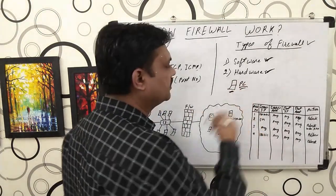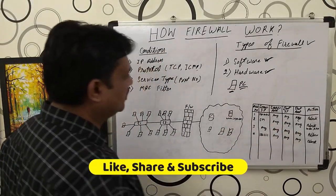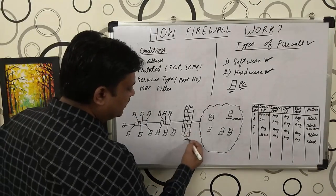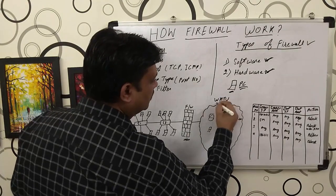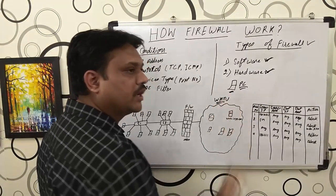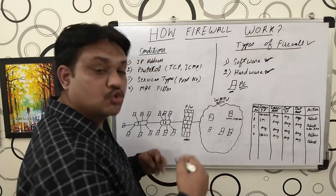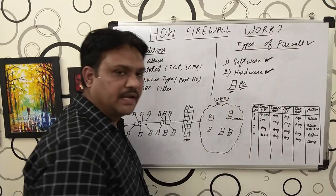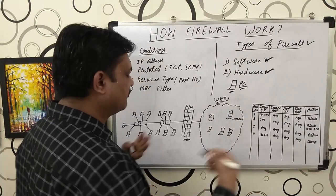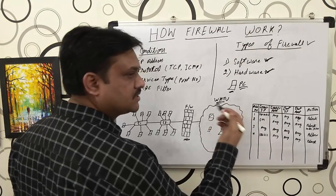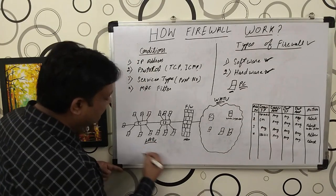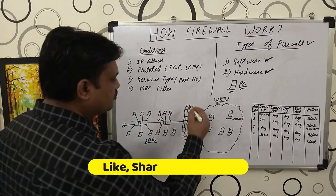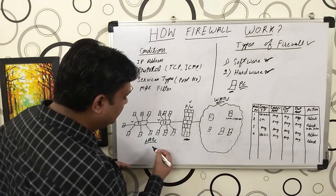Now let's talk about the hardware firewall. A hardware firewall can protect your local area network. Here is a firewall, and this is the WAN — or you can say the internet. The internet is known as an unsecured network because there are so many hackers, servers, and networks, and nobody is protecting this particular network. This is your local area network — the private network — and you have systems, switches, connected to your firewall.